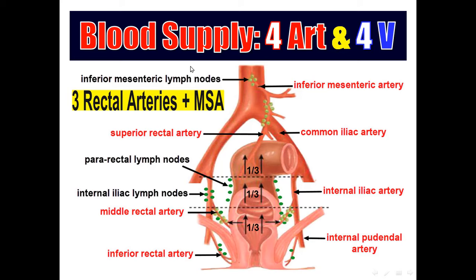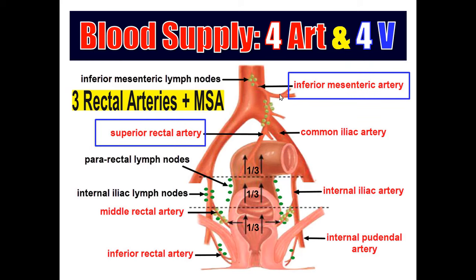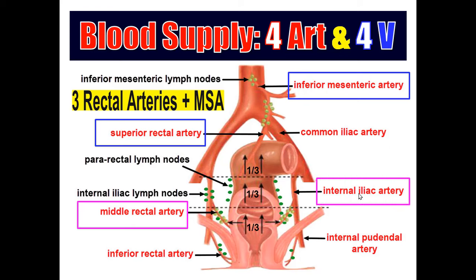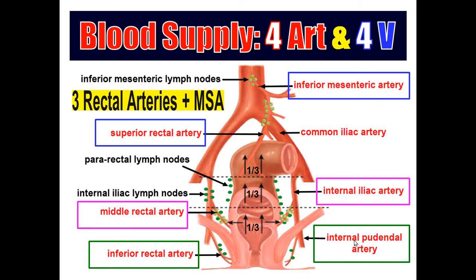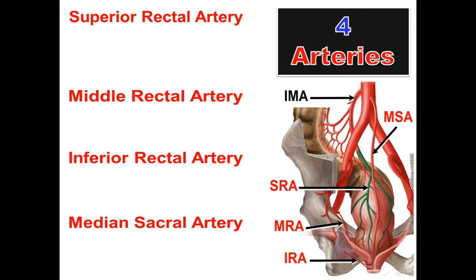Regarding the blood supply of the rectum: it is supplied by four arteries. The four arteries are three rectal arteries and the median sacral artery. The median sacral artery arises from the back of the abdominal aorta. Of the three rectal arteries — superior, middle, and inferior — the superior rectal artery is the continuation of the inferior mesenteric artery, the middle rectal artery is a branch from the internal iliac artery, and the inferior rectal artery is a branch from the internal pudendal artery.